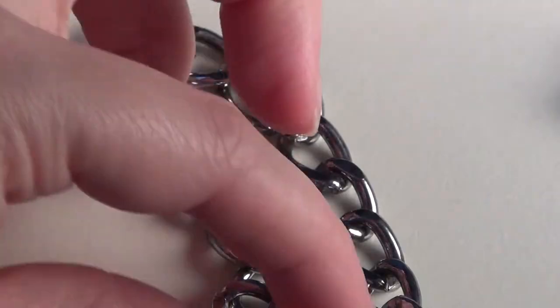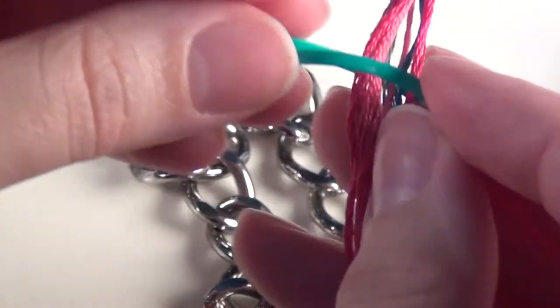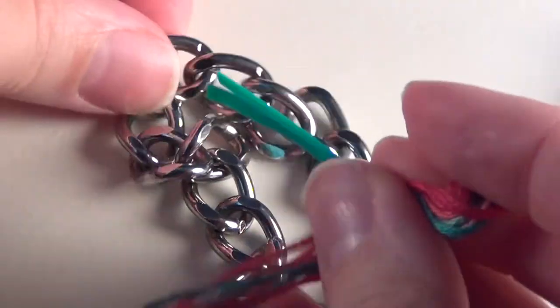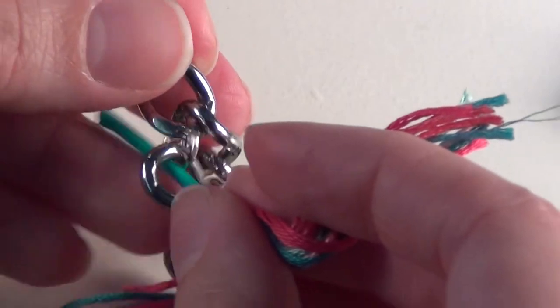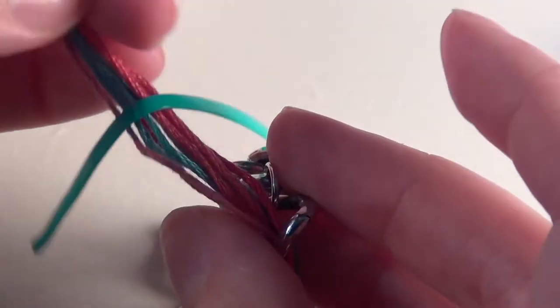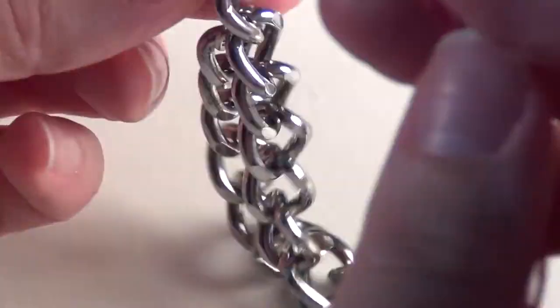Put it around my bundle of floss like so and pass it through the first link on one side of my chain, then pull it through.